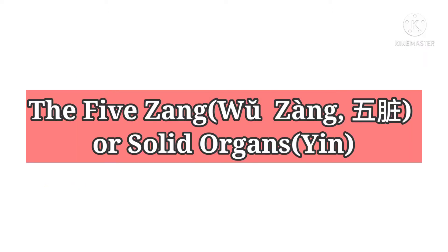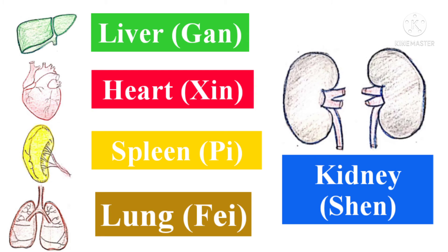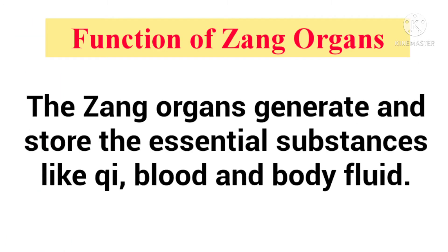The five Jiang, or solid organs, are liver, heart, spleen, lung, and kidney. The Jiang organs are the internal organs which generate and store essential substances like qi, vital essence, blood, and body fluid.